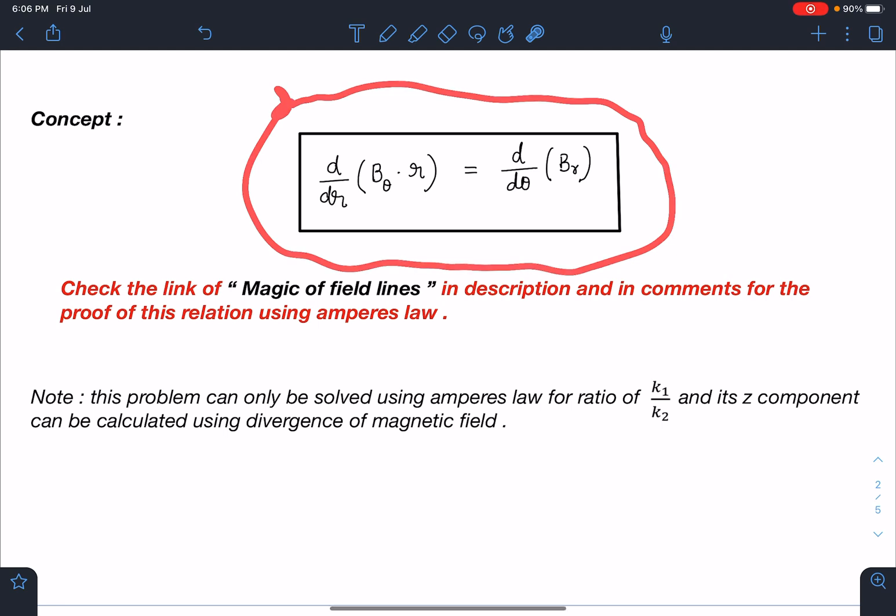All right, so let's discuss here concept-wise. In the previous video I have derived by using Ampere's law by taking a loop, and since the magnetic field is created by magnets and there is no current, so B dot dl was zero in the differential loop. From there we derived this result: d by dr of (B_theta r) equals d by d theta of B_r.